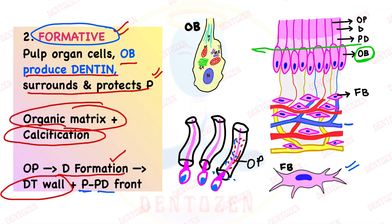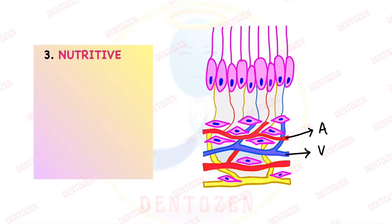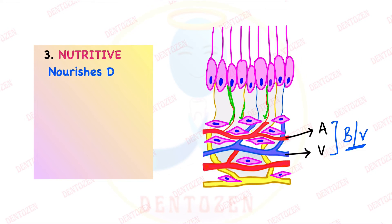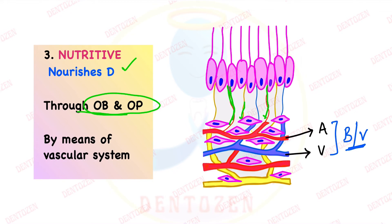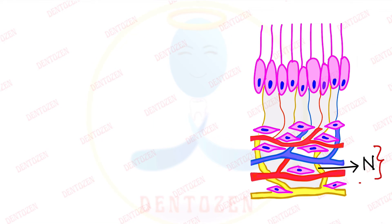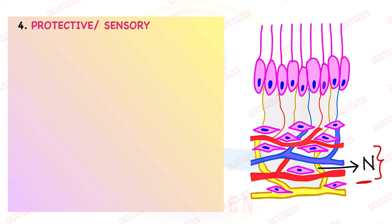The third function is the nutritive function, which is related to blood vessels. Blood vessels provide nutrition to the dentine through the odontoblast cells and odontoblastic processes. As we can see here, blood vessels nourish the dentine through the odontoblasts and their processes via the vascular system present in the pulp.